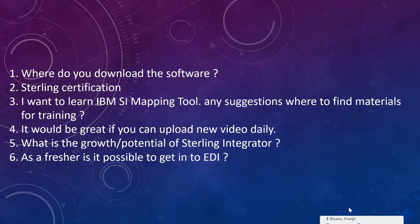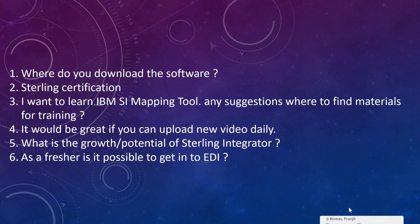Once you have purchased the software from Passport Advantage, if additional versions or patches are released for the product you purchased, you can download those patches, fixes, or newer versions from a website called IBM Fix Central. You can use the same credentials, list the software based on the version you purchased, view all available patches and fixes, and download and apply them from Fix Central.